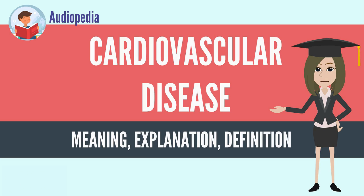Coronary artery disease, stroke, and peripheral artery disease involve atherosclerosis. This may be caused by high blood pressure, smoking, diabetes, lack of exercise, obesity, high blood cholesterol, poor diet, and excessive alcohol consumption, among others. High blood pressure results in 13% of CVD deaths, while tobacco results in 9%, diabetes 6%, lack of exercise 6%, and obesity 5%.